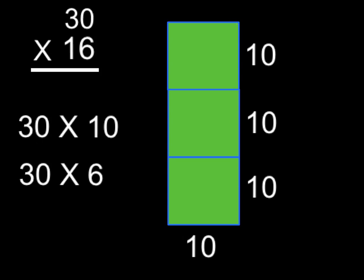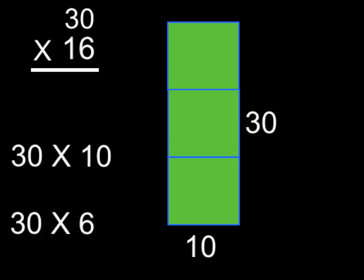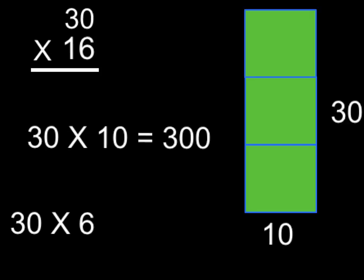30, there's our 30, times 10, there's our 10. So this rectangle itself is a 30 by 10 rectangle. So that is going to give us one of our partial products, and that partial product is 300.